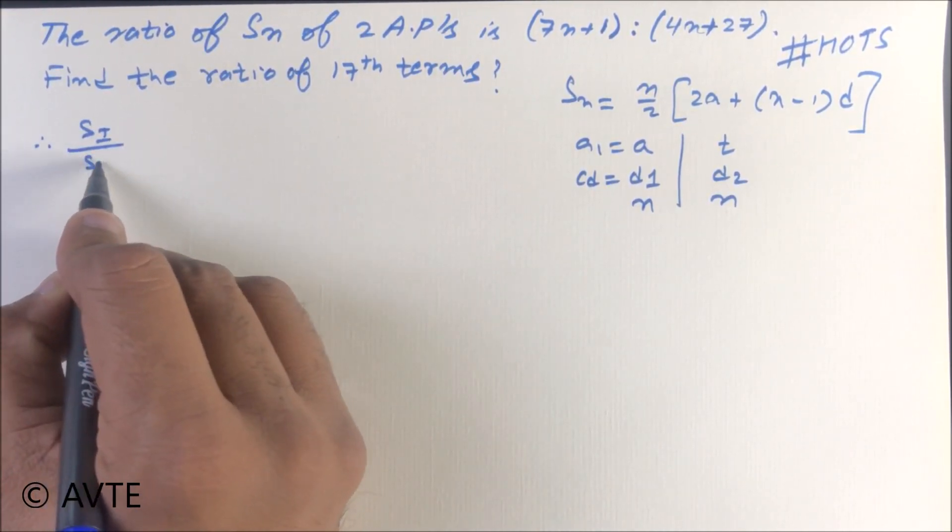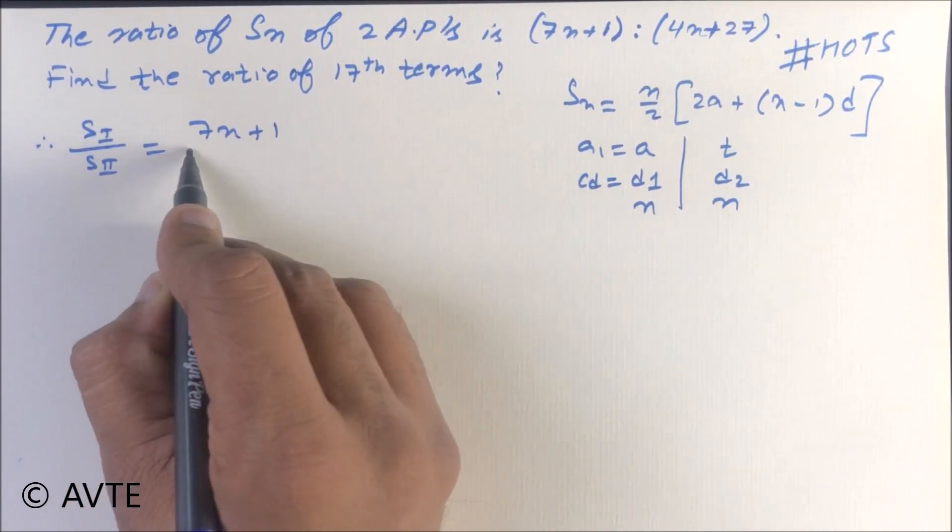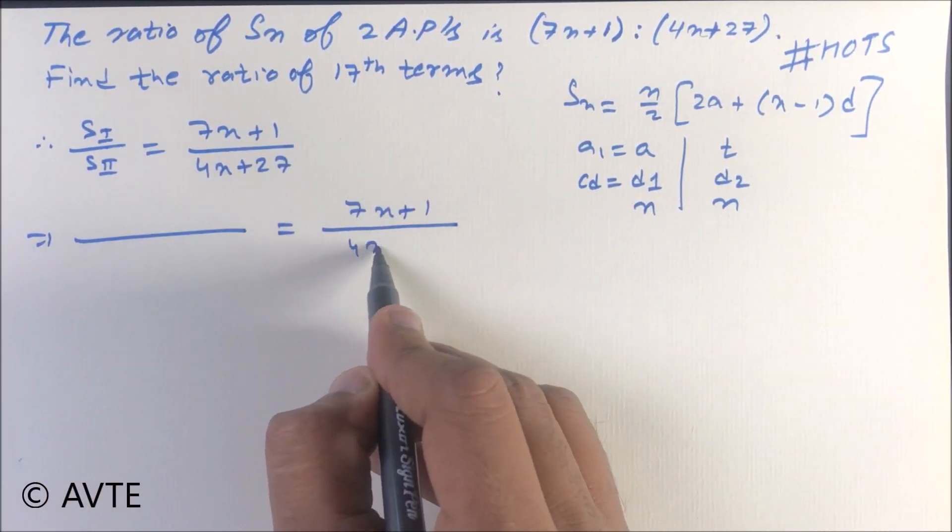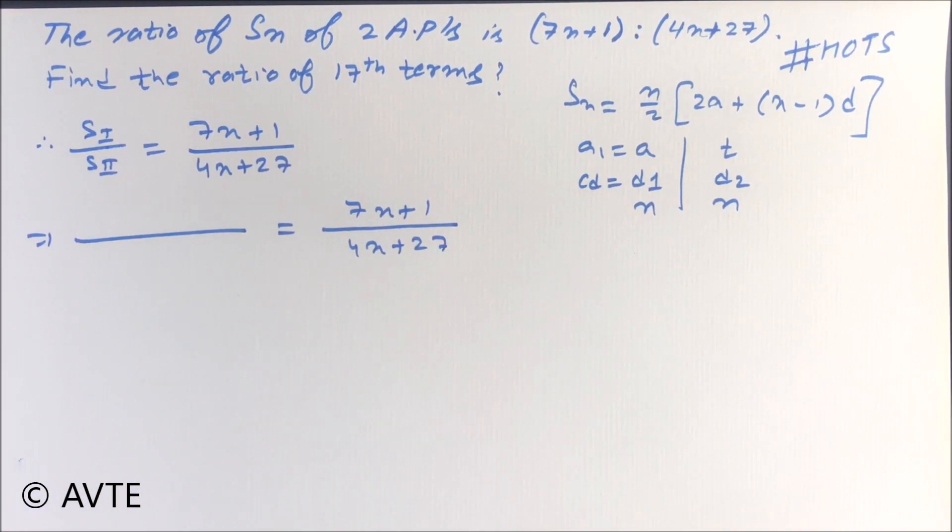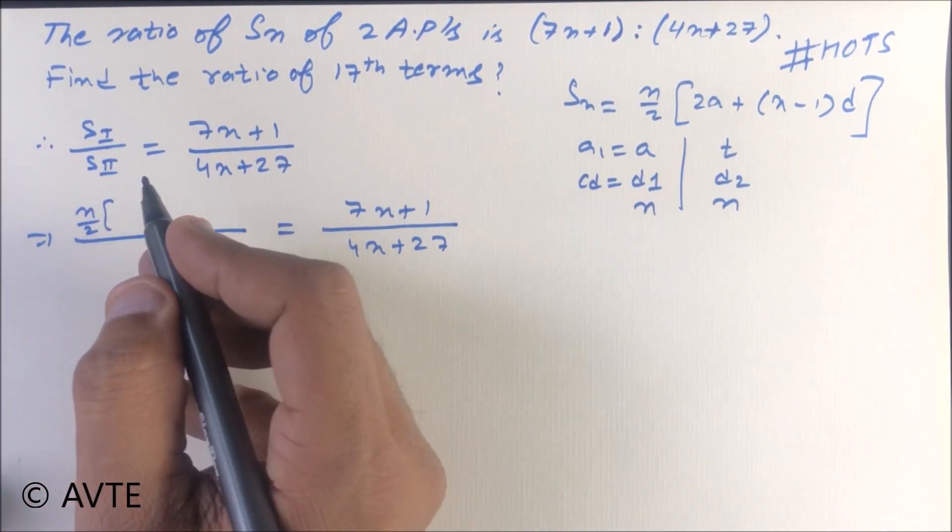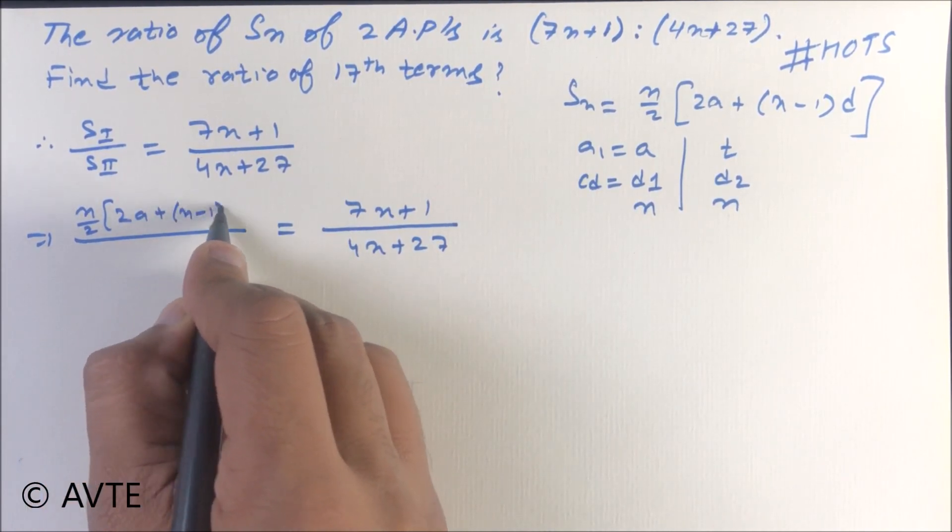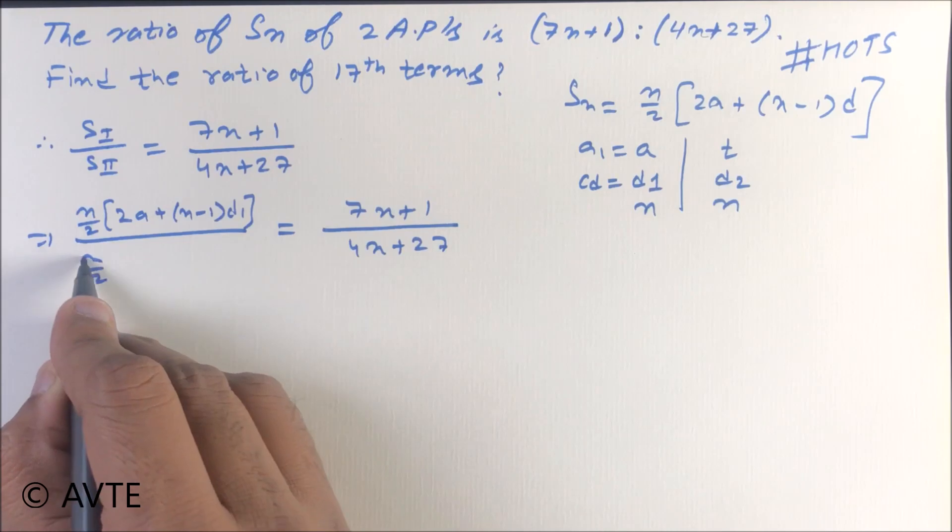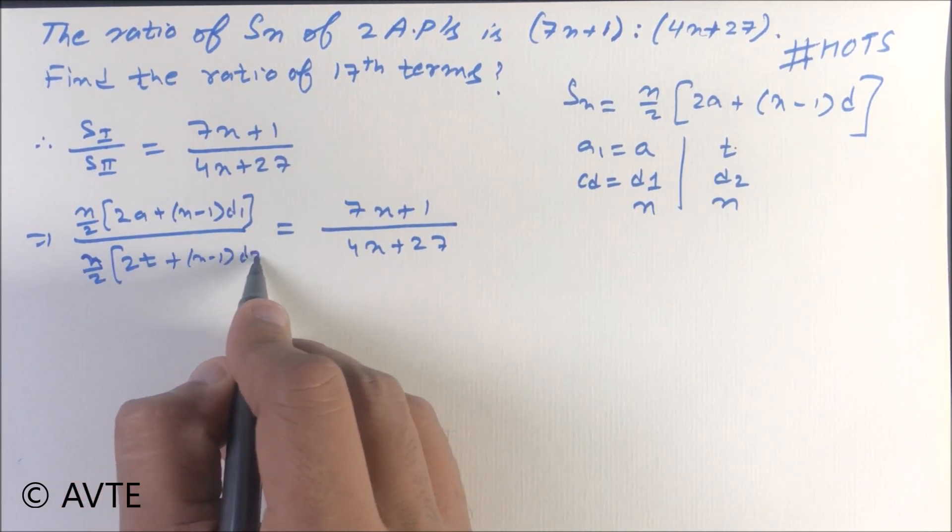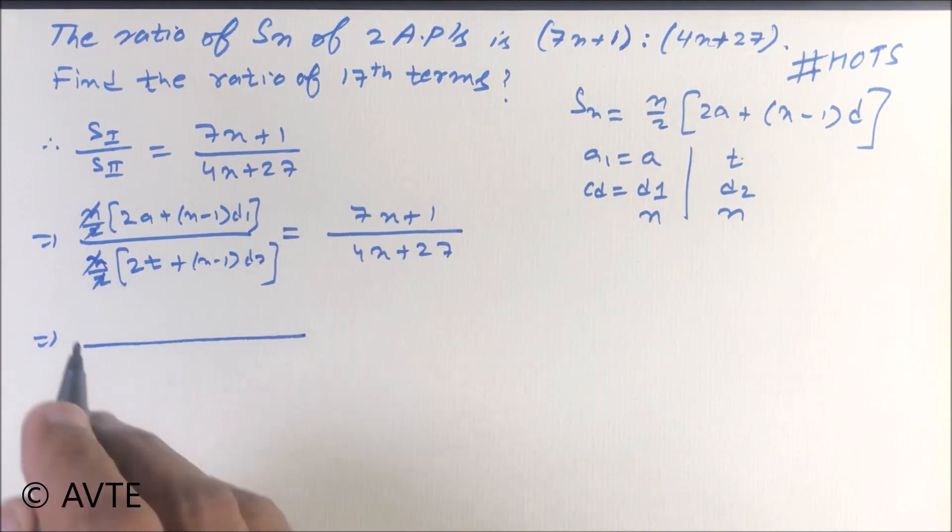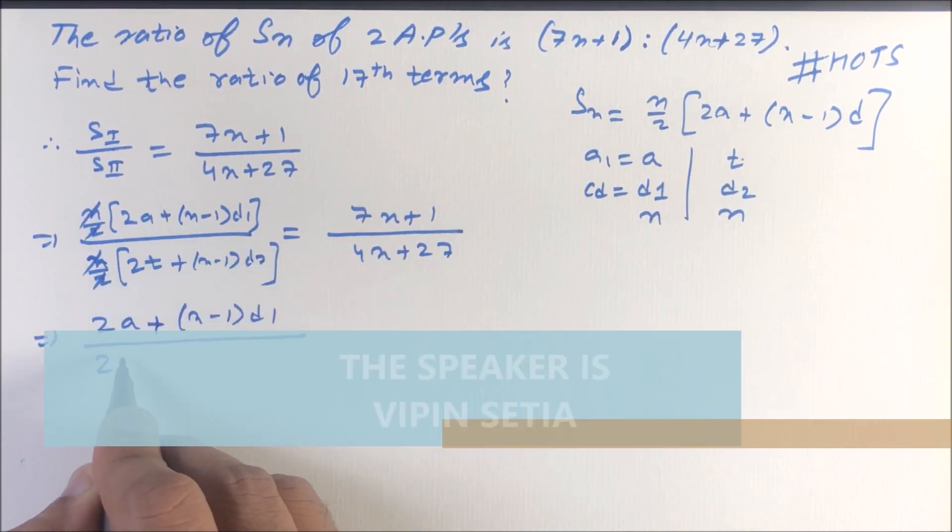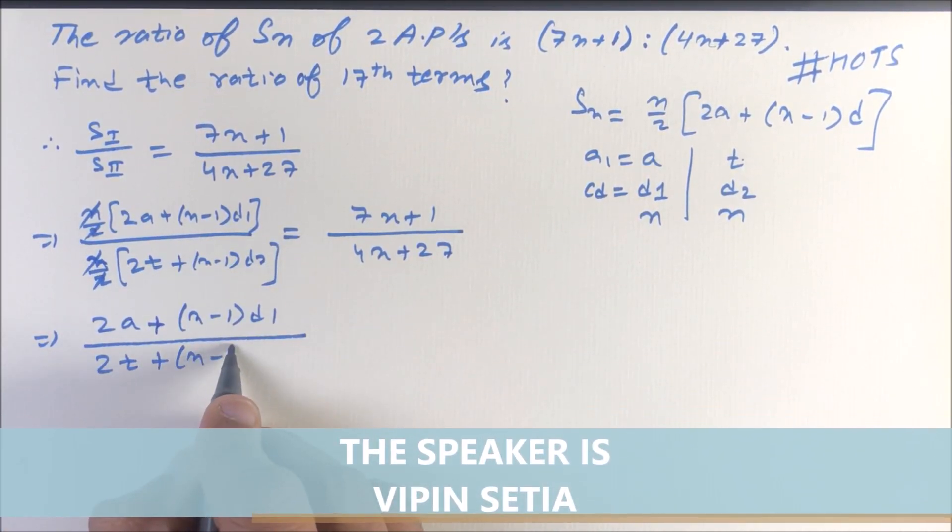So you have S1 upon S2 is 7n plus 1 upon 4n plus 27. The formula of S1 is n by 2, where 1 is representing the first AP and 2 is representing the second AP. n by 2 times 2a plus n minus 1 d1, n by 2 times 2t, because t is the first term of the second AP, plus n minus 1 d2. n by 2 gets cancelled. This is 2a plus n minus 1 d1 and 2t plus n minus 1 d2, equals 7n plus 1 upon 4n plus 27.